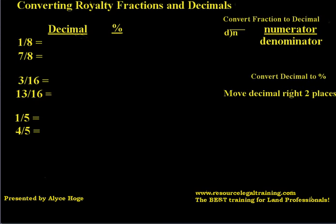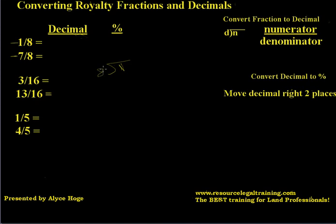Let's start with just 1/8 royalty. If the royalty in the oil and gas lease is 1/8, that means that the lessor is going to get 1/8 and the lessee is going to get the 7/8. So let's see what the lessor's interest — the landowner's interest — is with the 1/8. We're going to take the numerator and divide it by the denominator, which is 8.